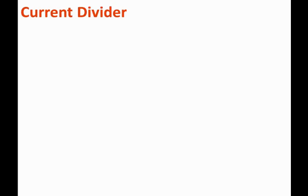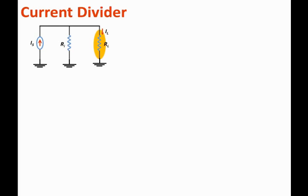Our next topic is current divider. Current divider is another simple yet important circuit used in electronics. The current divider concept is used when we only have two resistors in parallel. If you have three resistors in parallel or more, you cannot use current divider. Those two resistors are supplied by a current source, or we know the total current flowing into those two parallel resistors. The current divider states that the current will be divided among those two resistors.